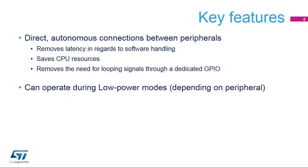The interconnect matrix offers two main features. First, it ensures direct and autonomous connections between peripherals, allowing removal of latency in regards to software handling, thus saving GPIO and CPU resources. Second, the interconnection between certain peripherals can even operate during low-power modes.